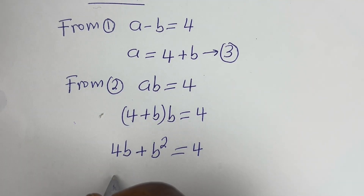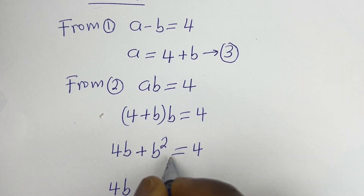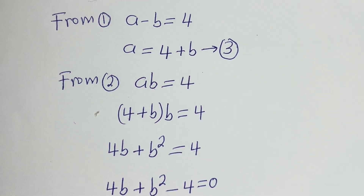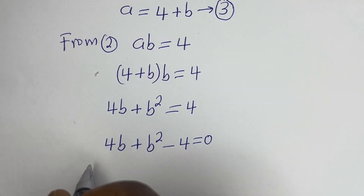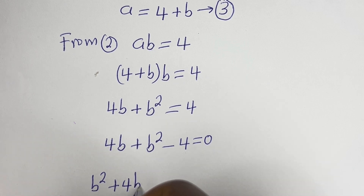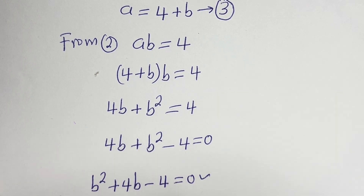Then we have 4b plus b squared. Bringing 4 to this side, it becomes minus 4, equal to 0. Let's put this in standard form: b squared plus 4b minus 4 is equal to 0. This is a quadratic equation.